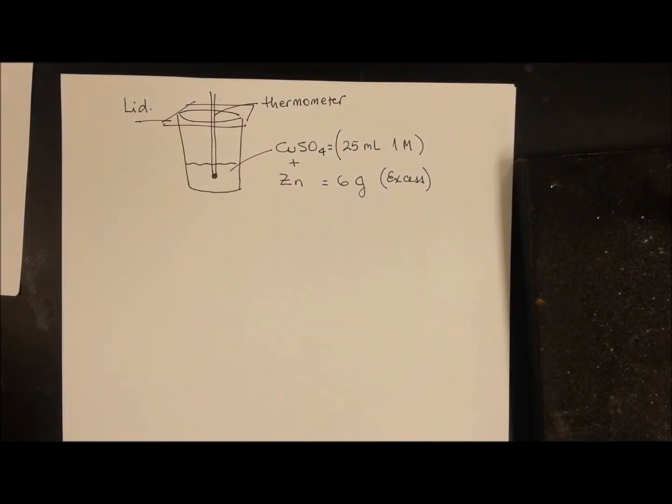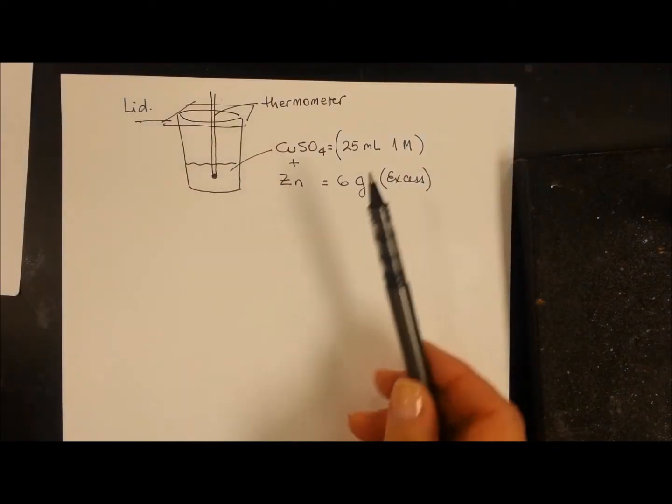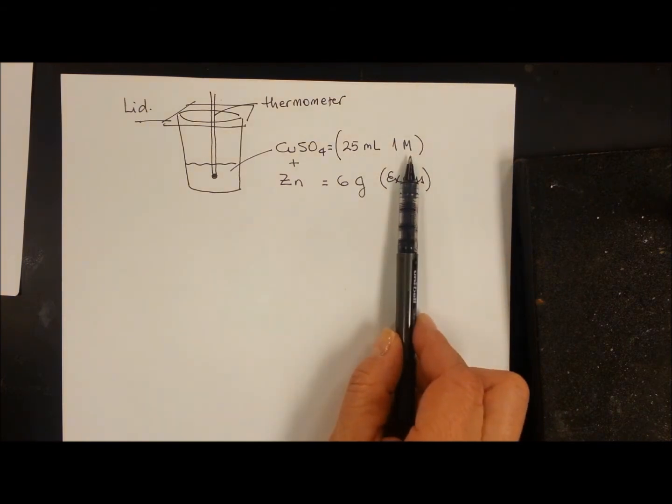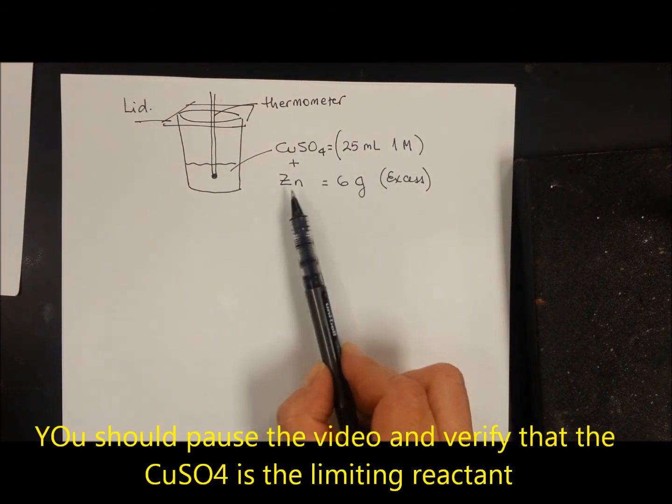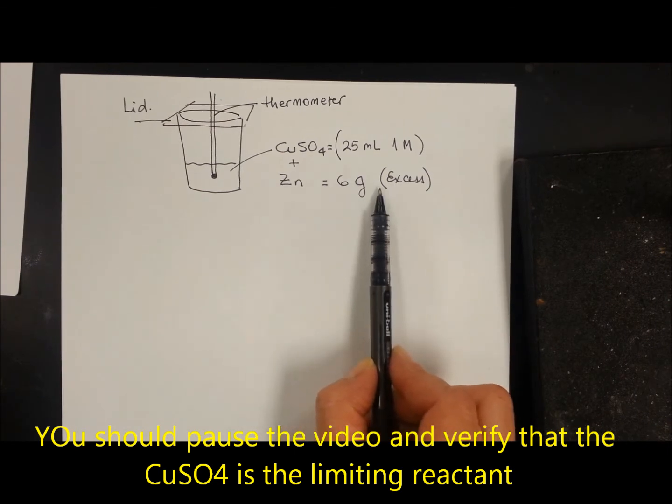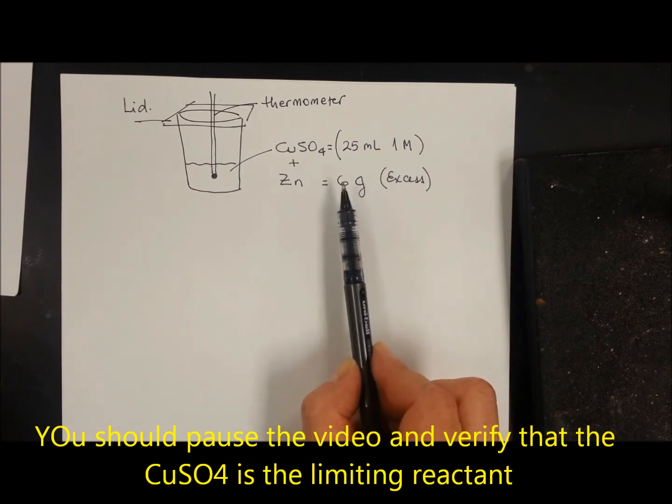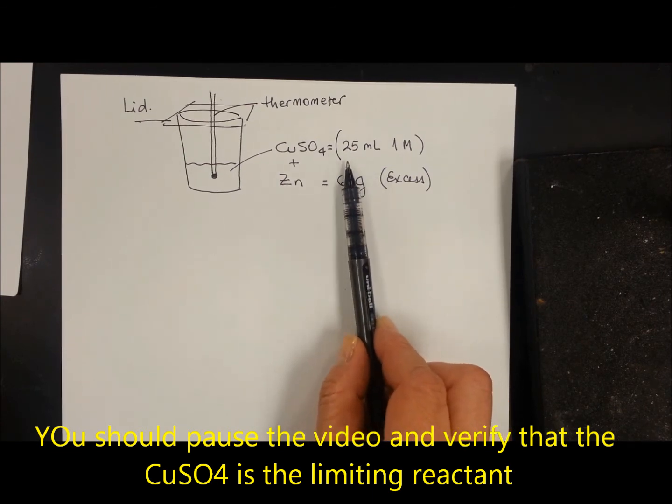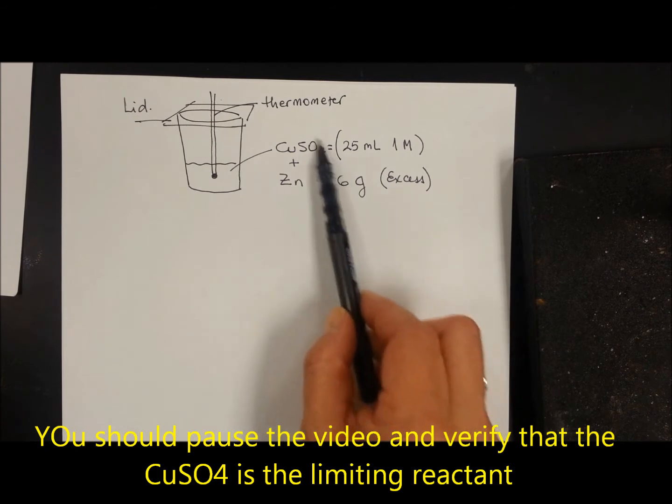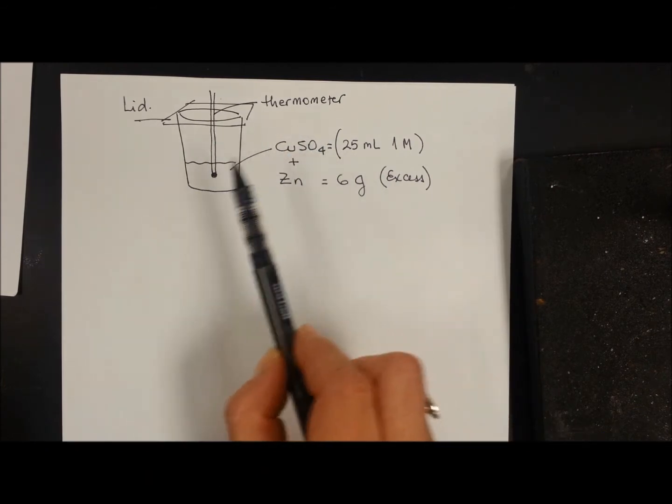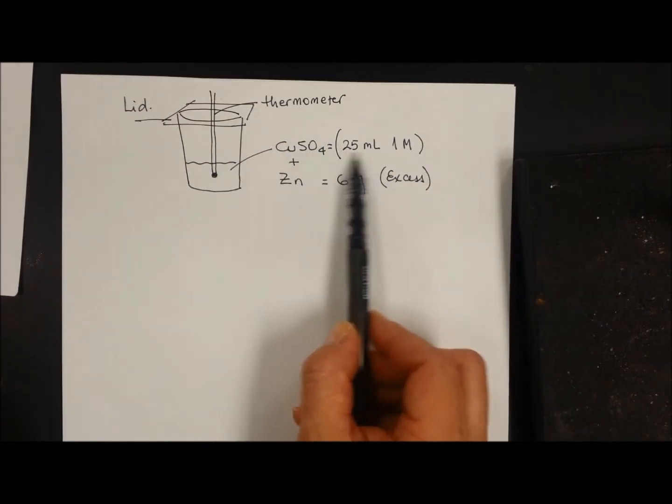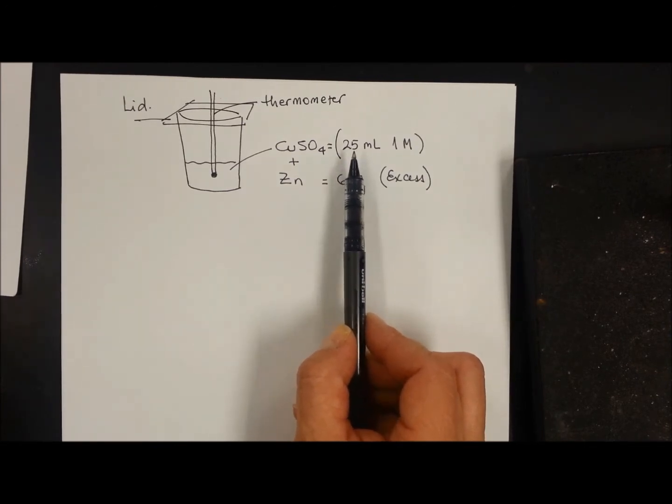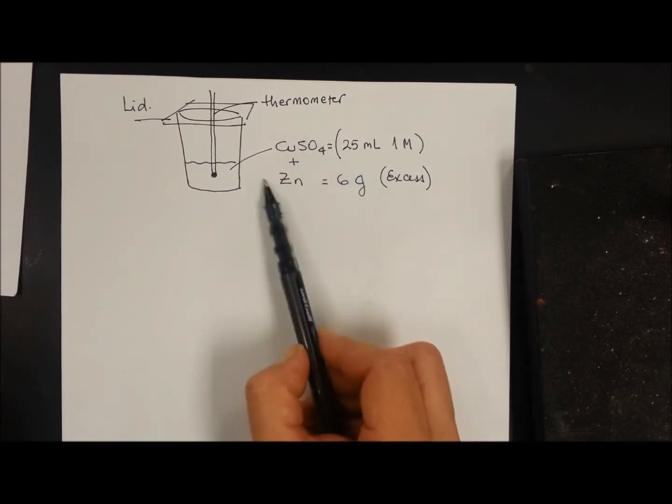Well in this experiment, what we did is put 25 milliliters of one molar solution of copper sulfate and six grams of zinc. If you calculate the molar ratio, you are going to see that the zinc is the one in excess. So we are going to do our calculations with this. The thing is that when these two react, the water that is contained in the solution of the 25 milliliters is going to absorb the heat released in the reaction.